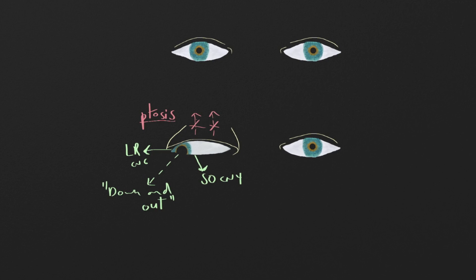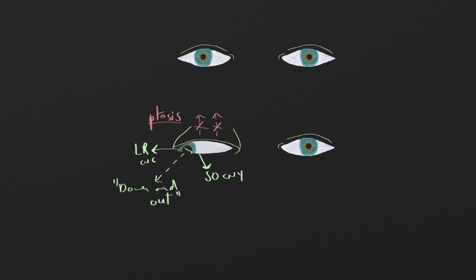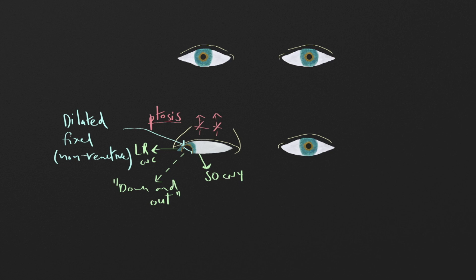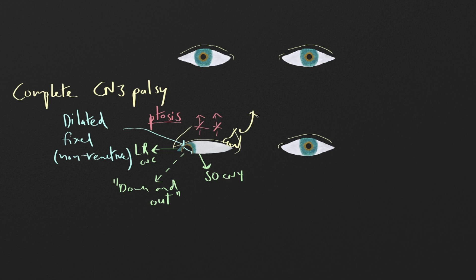The loss of tone from the four CN3-innervated extraocular muscles means lateral rectus and superior oblique overpower them, resulting in the down-and-out position. The third finding is a dilated pupil that is fixed — non-reactive to both light and accommodation. Together, ptosis, down-and-out gaze, and a fixed dilated pupil constitute a complete cranial nerve 3 palsy, with complete ptosis requiring the eyelid to be lifted to examine the other signs.